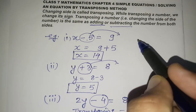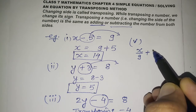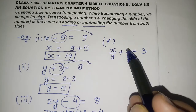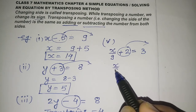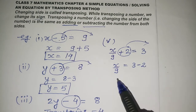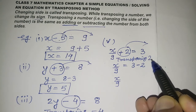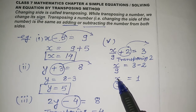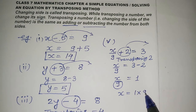One more example involving division: x divided by 9 plus 2 equals 3. First, transpose plus 2 — changing its sign, it becomes minus 2: x divided by 9 equals 3 minus 2, so x divided by 9 equals 1. Now 9 is in division with the variable, so it goes to multiplication: x equals 1 times 9.